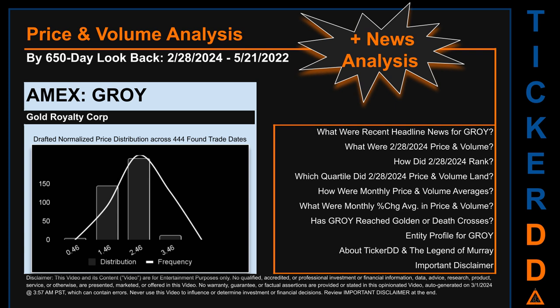Now that we have made our lawyers happy, capitalist brothers and sisters, let's get started. GROY went public on March 9, 2021, which was roughly three years ago. Looking back 650 calendar days from Wednesday, February 28, 2024 to Saturday, May 21, 2022, we found 444 applicable trade dates for use in our analysis. The chart shown on this page is our initial attempt at studying the price for GROY after dynamically normalizing price distribution across those discovered trade dates. The bar chart is the generated distribution, and the overlaid line graph, if generated, is the frequency of the prices on the x-axis.